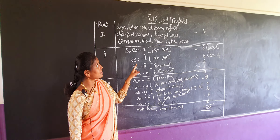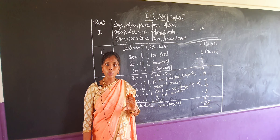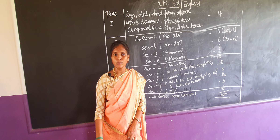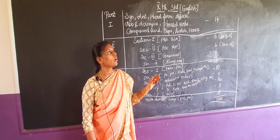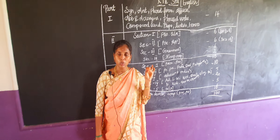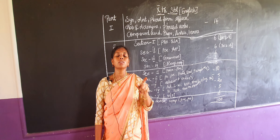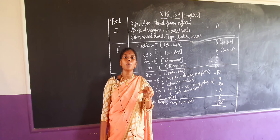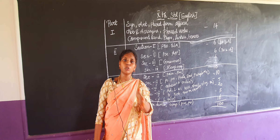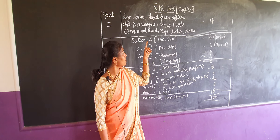Next is phrasal verbs. Some students feel it is very difficult, but don't worry — when you learn the meaning, you can easily identify the phrasal verbs. Next is compound words — it is very easy. They will ask two types of questions. For example, for 'walking stick,' they give options A, B, C, D and you choose the compound word. The second type is about parts of speech: noun means naming word, verb means action word. Gerund means verb plus 'ing' — for example, 'dancing' is verb plus 'ing.' Verb plus noun we call a compound word.